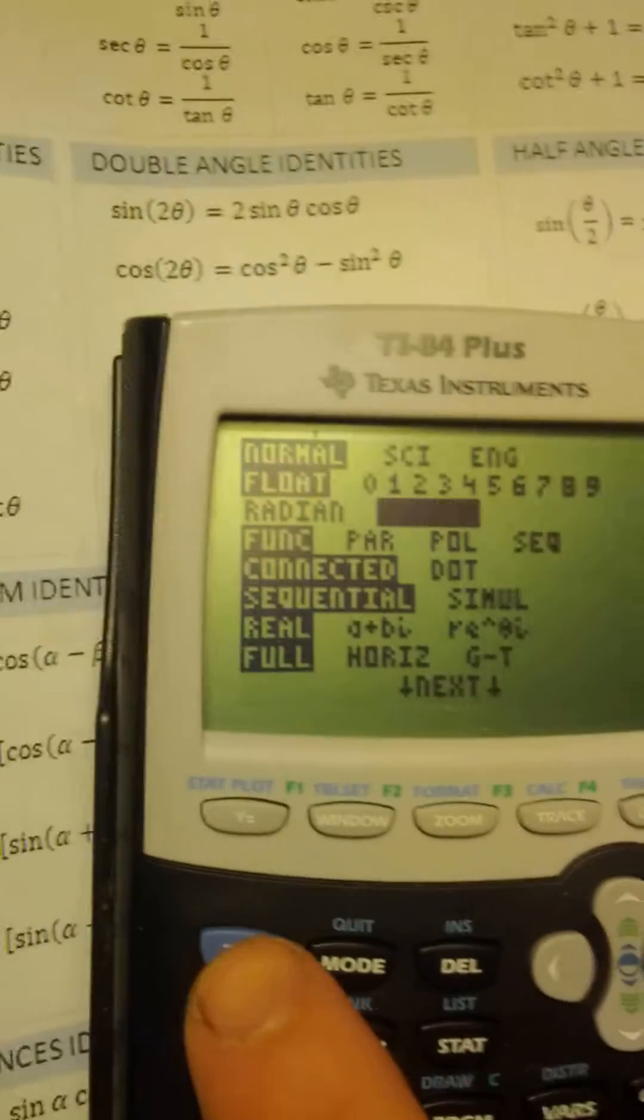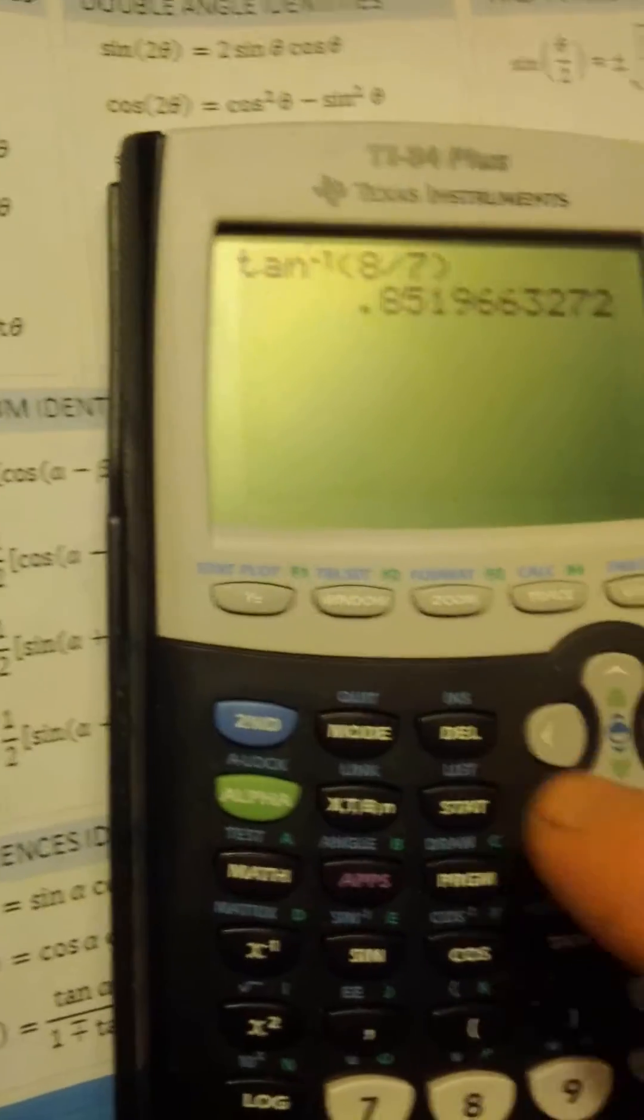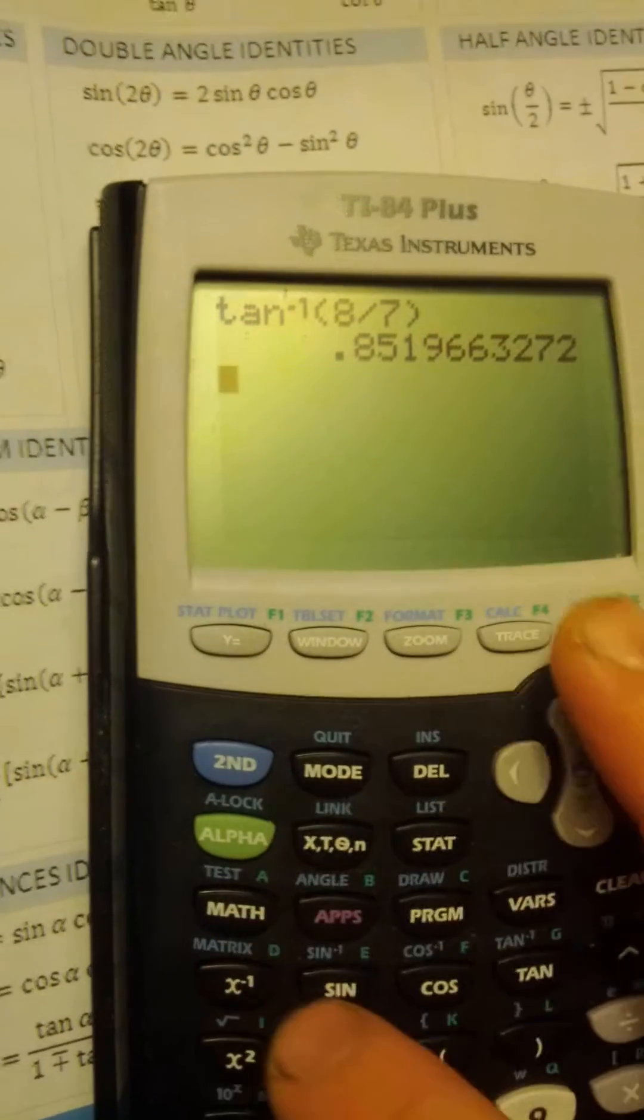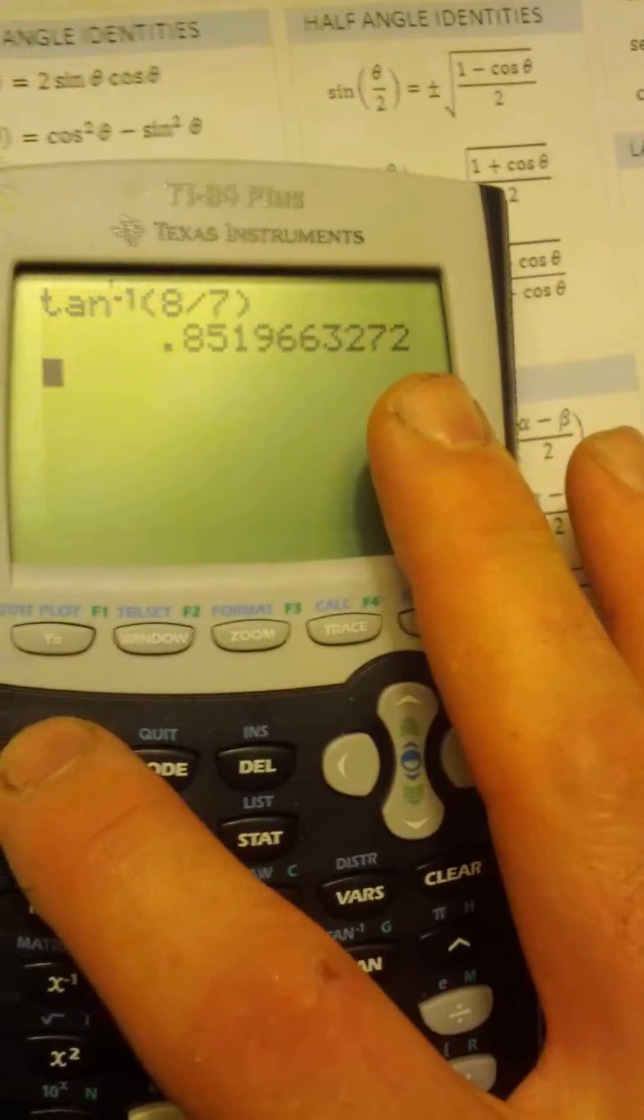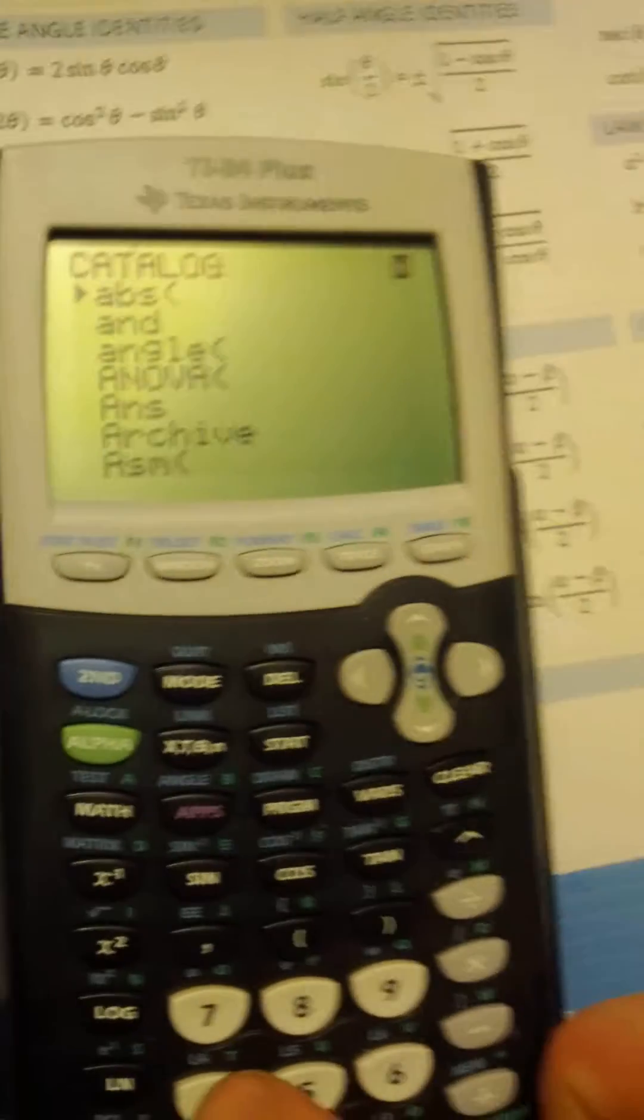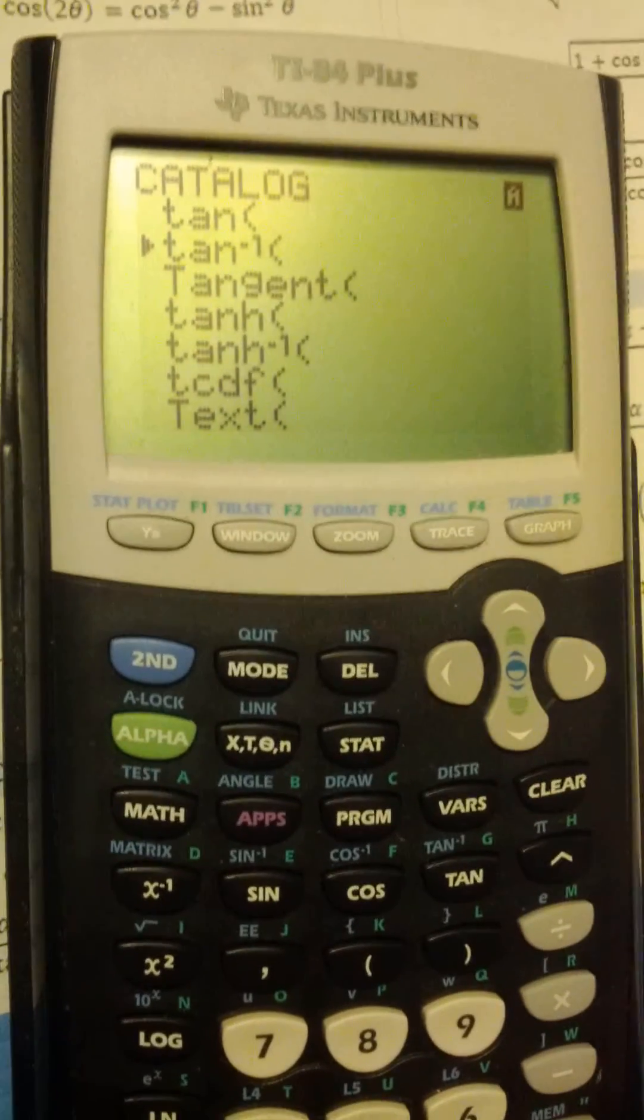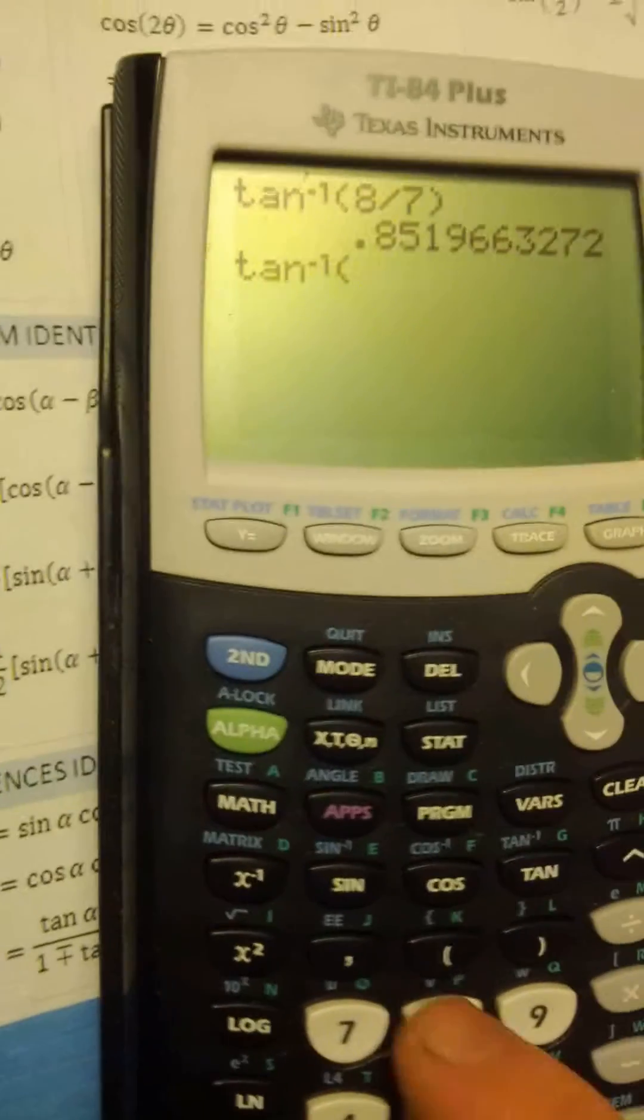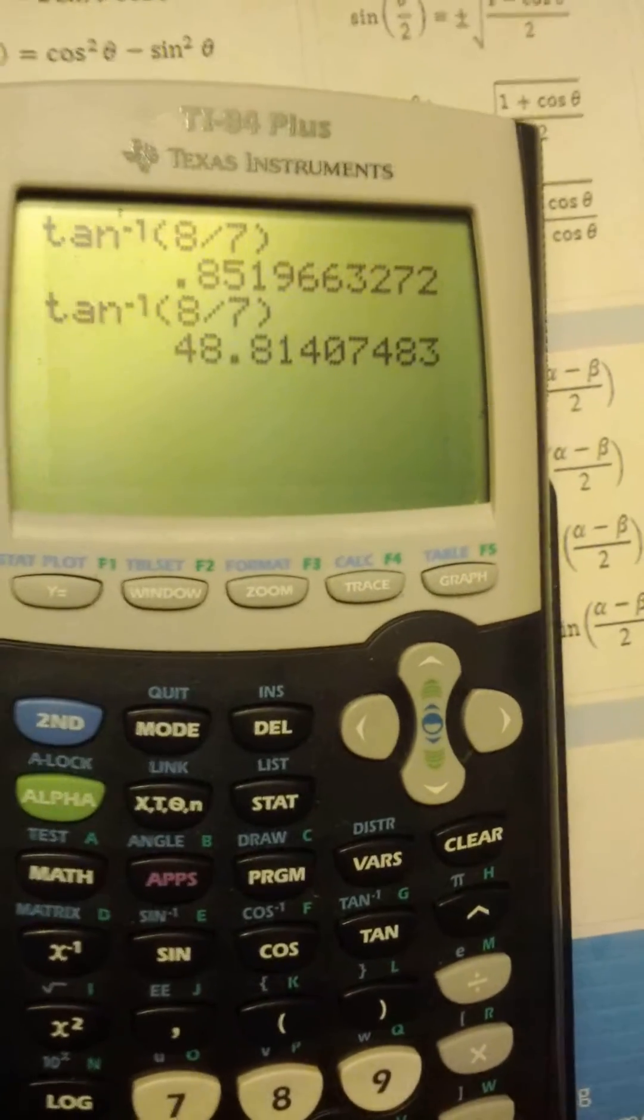So let's get degrees. I hit enter after I scroll down, and then to get out of this I just hit second quit. All right, let's run that again. So catalog, second catalog, jump to T.